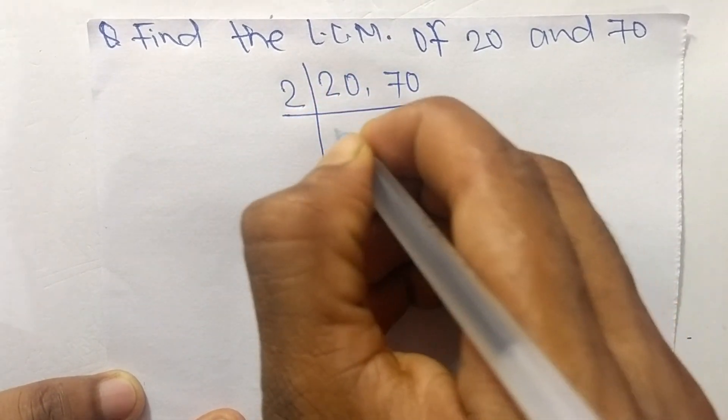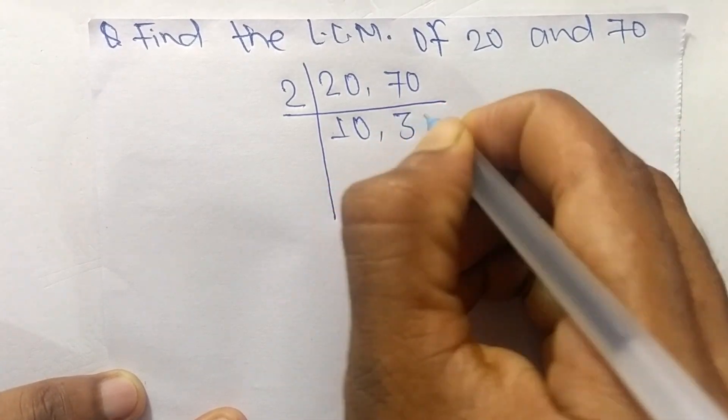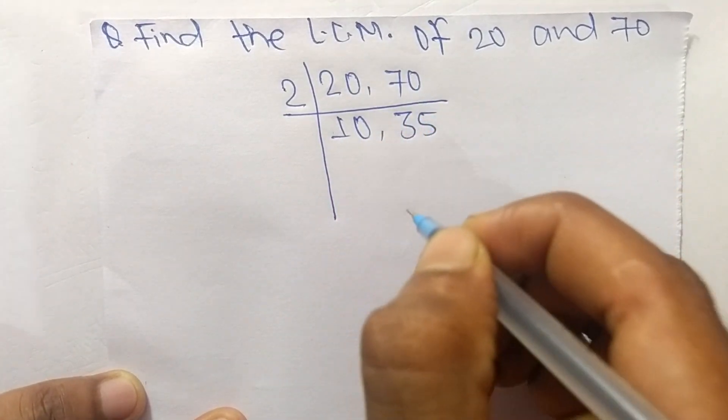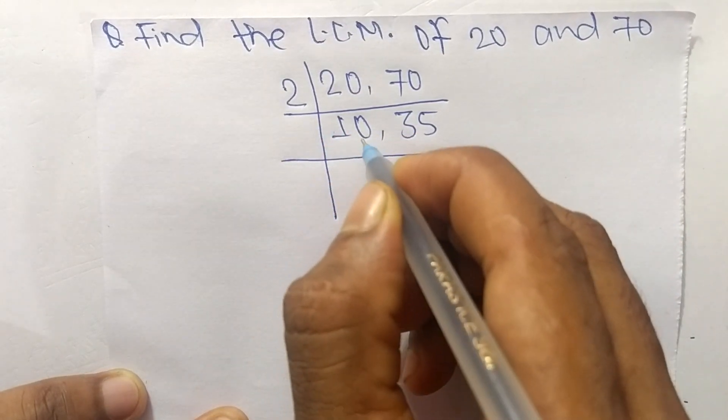The number is 2. So 2 times 10 equals 20, 2 times 35 equals 70. Now 2 can divide 10